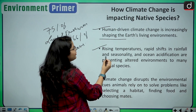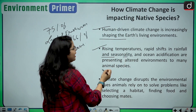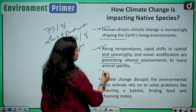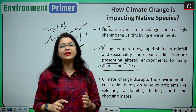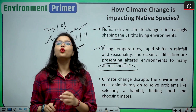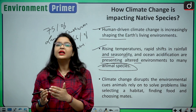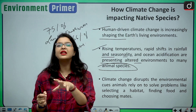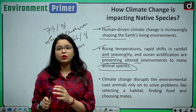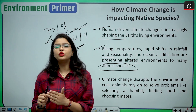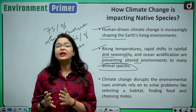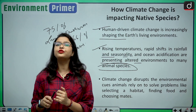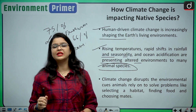Human-driven climate change is increasingly shaping the earth's living environment, completely changing our biodiversity and ecology. Rising temperatures, rapid shifts in rainfall and seasonality, and ocean acidification are presenting altered environments to many animal species. Ocean acidification increases acidity in oceans, reducing oxygen levels, and making oceans more polluted — threatening both land and marine species.